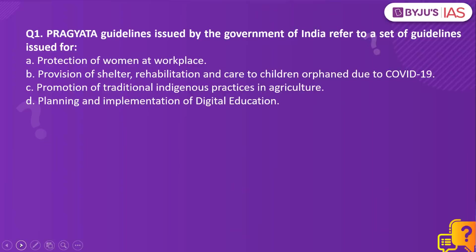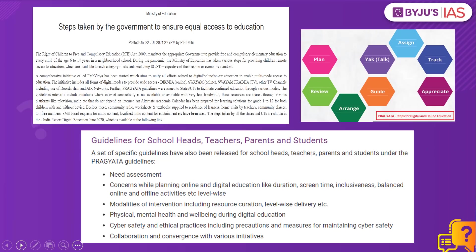Pragyata guidelines issued by the Government of India refer to a set of guidelines issued for: Option A, Protection of Women at Workplace; Option B, Provision of Shelter, Rehabilitation and Care to Children Orphaned Due to COVID-19; Option C, Promotion of Traditional Indigenous Practices in Agriculture; Option D, Planning and Implementation of Digital Education.